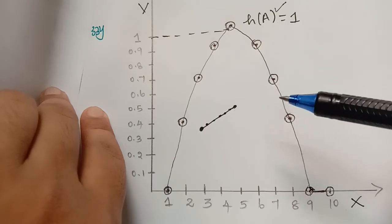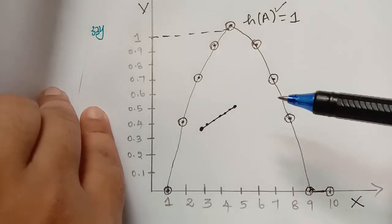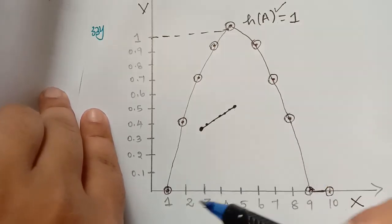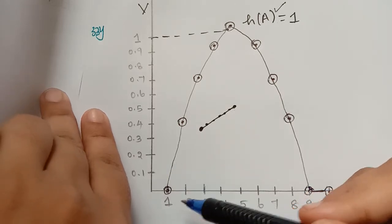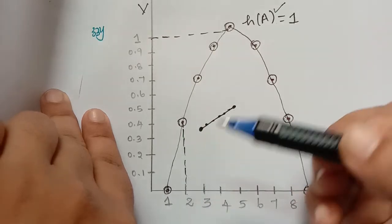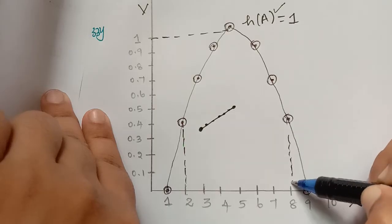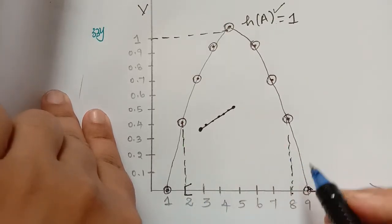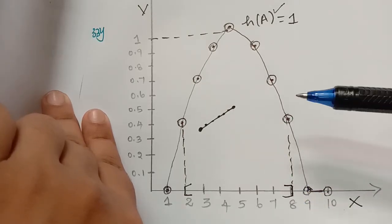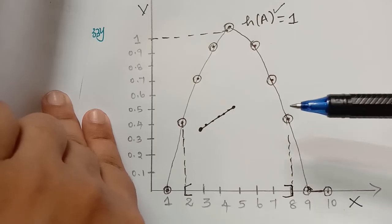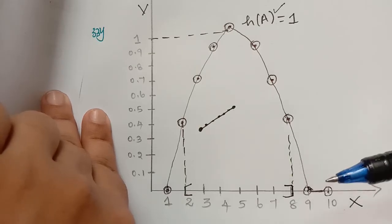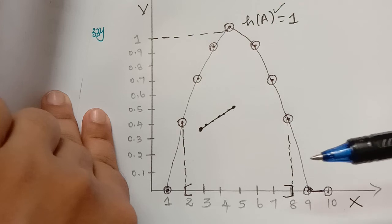We have to prove that the support of A is bounded. The strong zero cut of A contains all those elements whose membership grades are strictly greater than zero. If we check, the support lies between two bounds: lower bound is 2 and upper bound is 8. Therefore the strong zero cut of the fuzzy set A is bounded. All three conditions are satisfied, hence the example we have chosen is a fuzzy number.